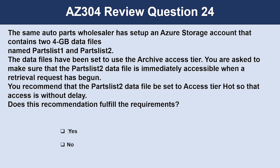Question number 24. The same auto parts wholesaler has set up an Azure storage account that contains two 4GB data files called Parts List 1 and Parts List 2. The data files have been set to use the archive access tier, and you are asked to make sure that the Parts List 2 data file is immediately accessible when a retrieval request has begun. You recommend that the Parts List 2 data file be set to access tier Hot so that access is without any delay. The correct answer is yes. Changing the access tier from archive to Hot allows for immediate access for retrieval.